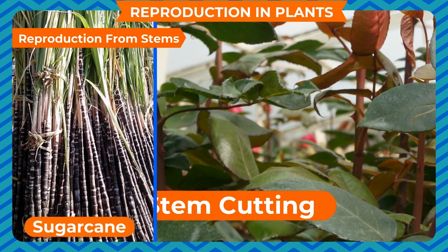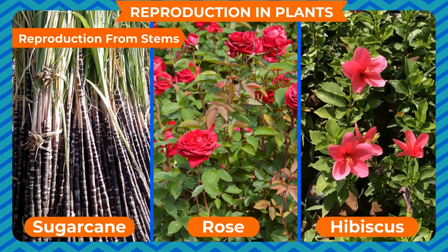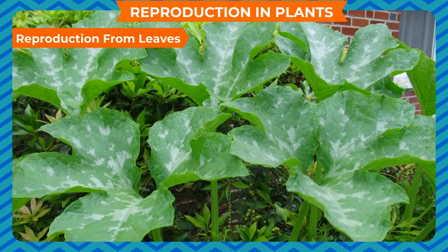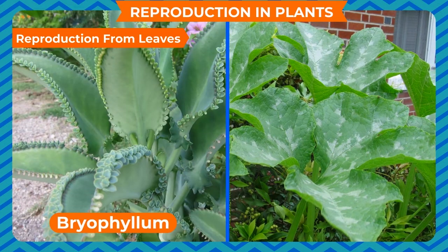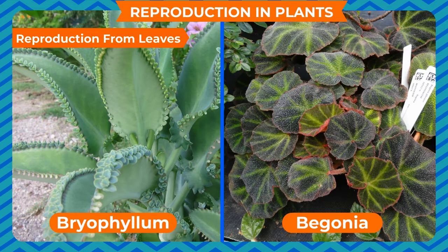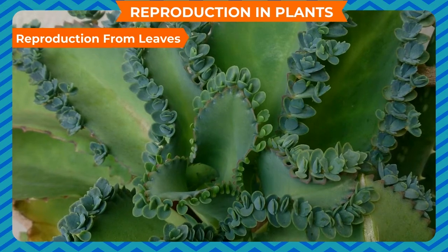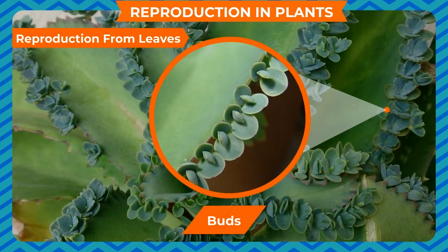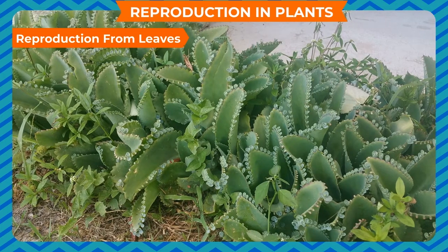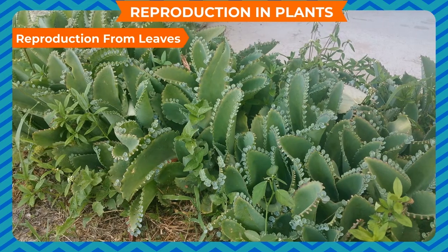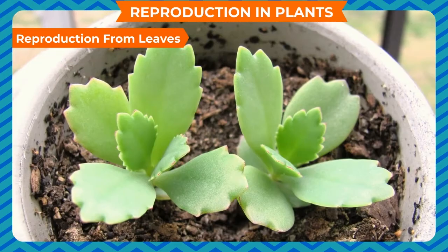Many plants like sugarcane, rose, and hibiscus grow from stem cuttings. Reproduction from leaves: some plants like bryophyllum and begonia have fleshy and thick leaves bearing buds on their edges. These buds reproduce new plants through them.